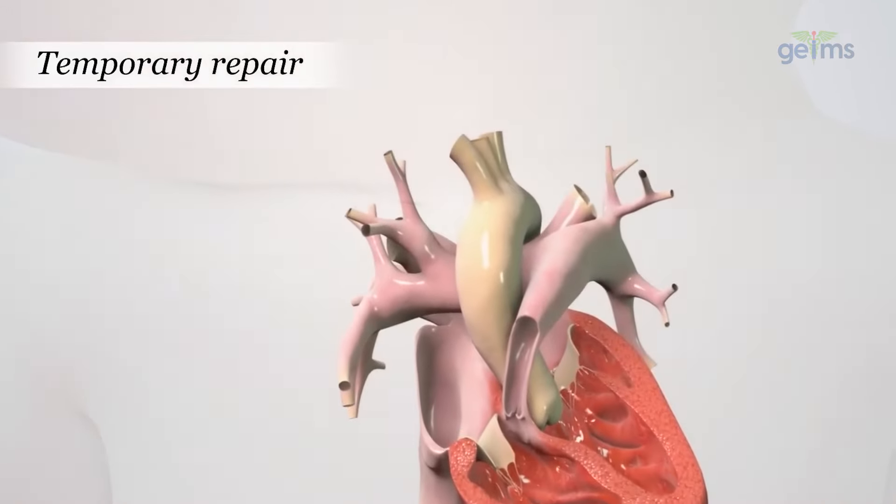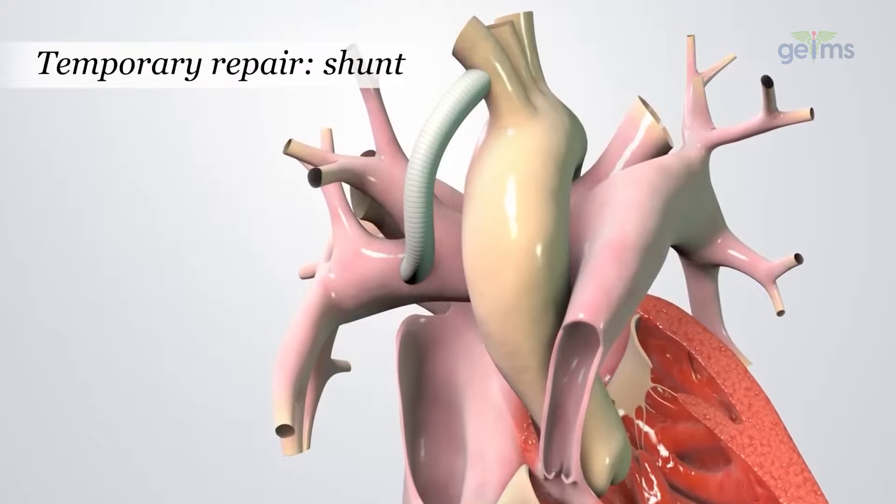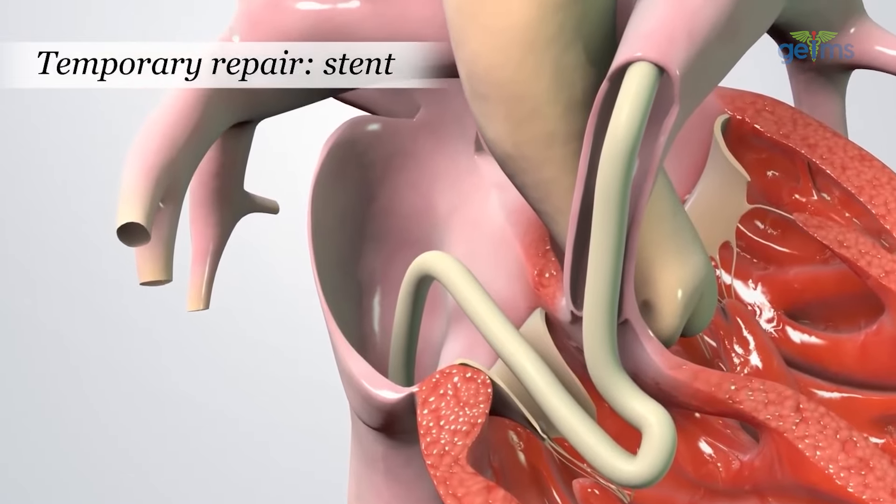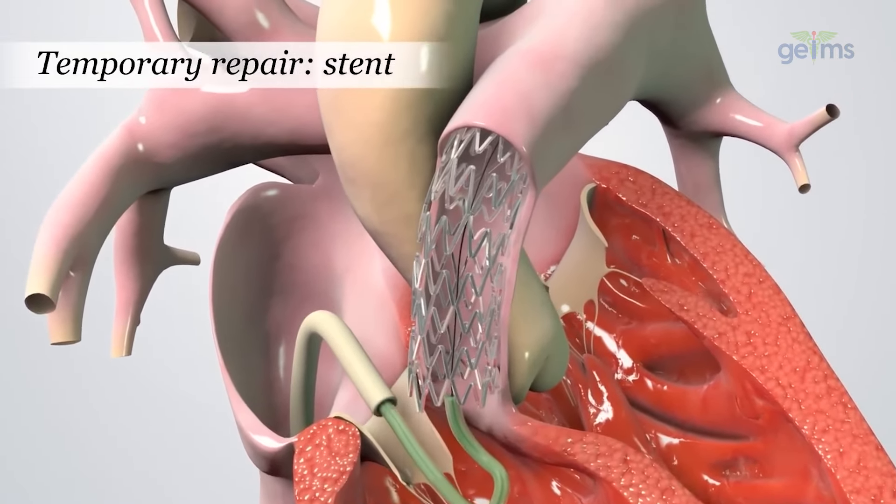After the child grows up, in 2-3 years, they can do cardiac surgery and a correction. In such small children there is a lot of risk, so now with technical advances, survival depends on PDA stenting, which is a non-surgical procedure. Through this, we can place a stent in the PDA. Recently, we have done this procedure at Graphic Era Hospital successfully.